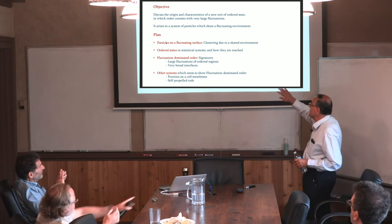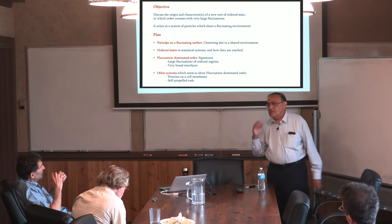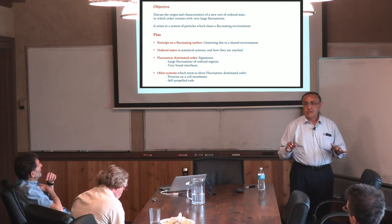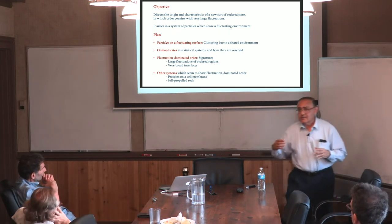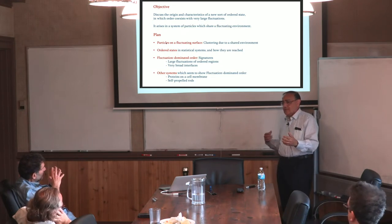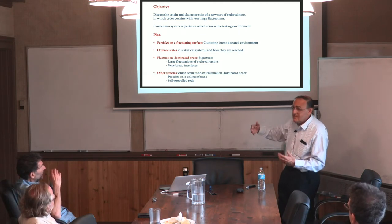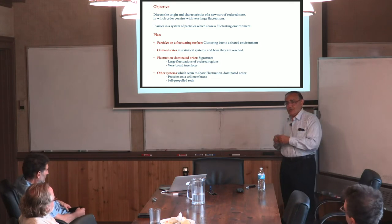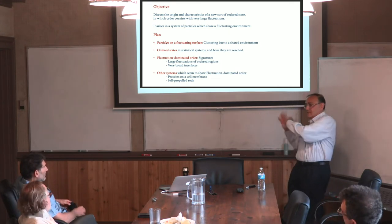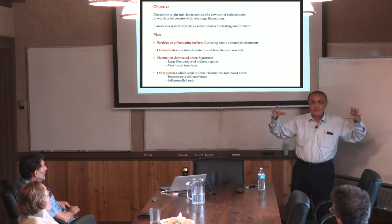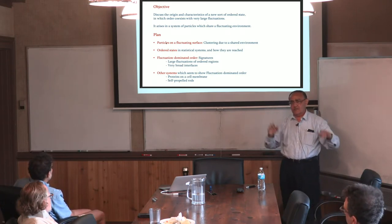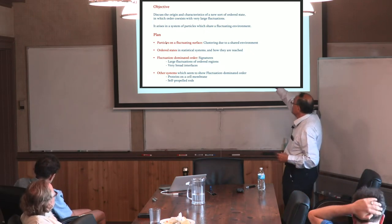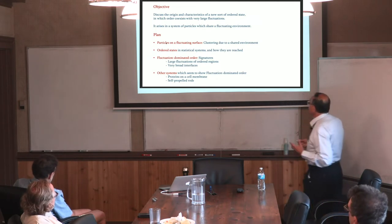The way I will proceed: first I will tell you about particles on a fluctuating surface. The fluctuating surface is creating an environment for the particles. But there are many particles, so they share an environment. When particles which otherwise do not interact with each other share an environment, indirect interactions — or correlations — build up. The favorite way of physicists modeling interactions is through direct forces like Van der Waals or Coulomb, but here is another way: many particles sharing the environment and getting correlated. Correlations can induce ordering — that is what I mean by clustering due to a shared environment.